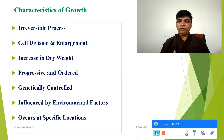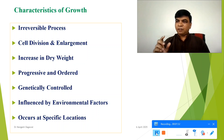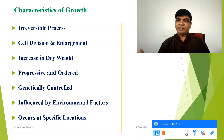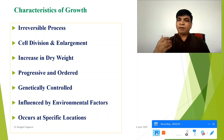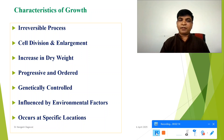Another characteristic is that growth is progressive and ordered. The plant does not grow randomly — it follows a particular sequence: the seed undergoes germination, then formation of the root, stem, leaf, and then flower. This progressive order is also genetically controlled — all these processes are controlled by the genes.